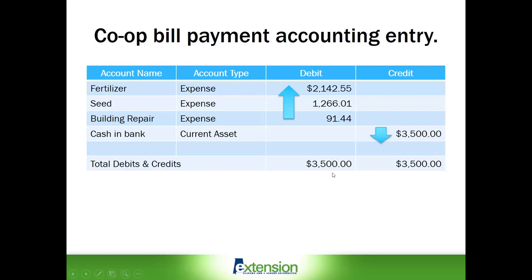So in this example, total debits and credits are $3,500.